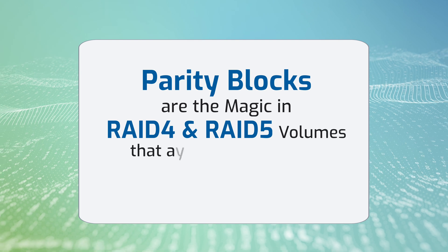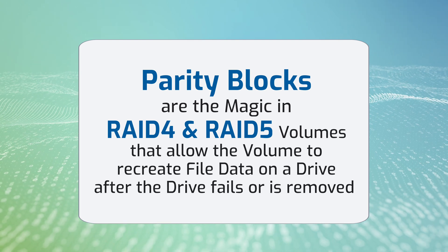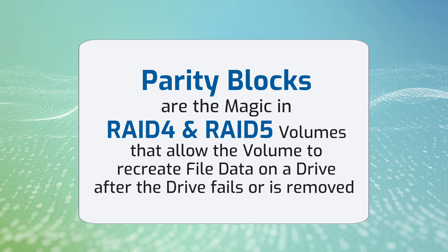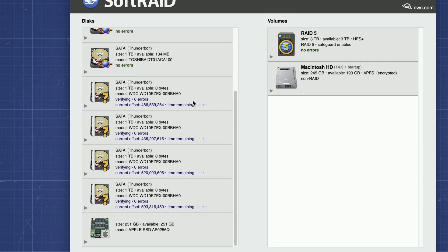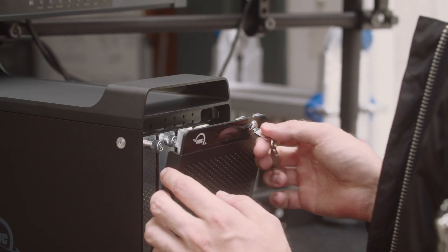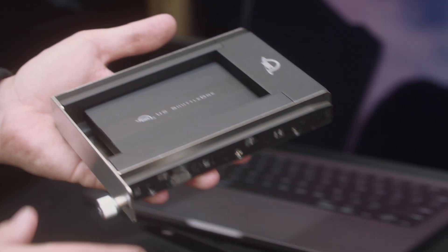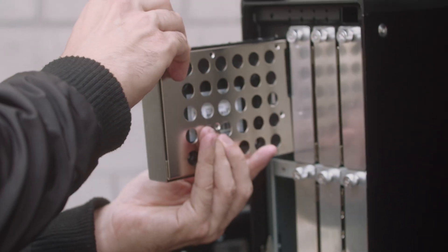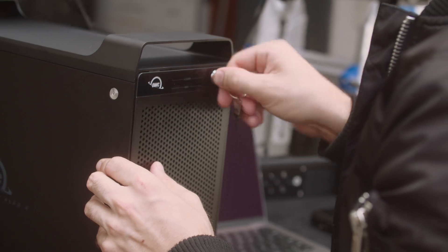This video mentions parity blocks used in RAID 4 and 5 volumes — but what are parity blocks? Parity blocks are the magic in RAID 4 and 5 volumes which allow the volume to recreate file data that is on a drive after the drive fails or is removed. They are calculated using the file data on each of the drives for the volume and stored in a hidden portion of the disks. When a drive fails or is removed, the data from the remaining drives in conjunction with the parity blocks is used to recreate the data on the missing drive.